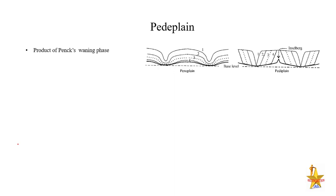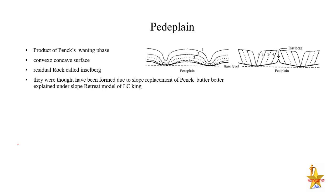Pediplain comes as a product of the waning phase and features a convex or concave surface. Where Davis's model has Monadnocks, Penck's model uses the term Inselberg. The explanation for this was better given by the slope retreat model of L.C. King. Penck gave the slope replacement model — this is very important to remember. These were discussed in detail in the last class.